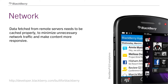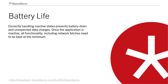This way, users don't have to stare at a spinner and wait for the server to respond with data when they've just seen this content a few seconds ago. All applications should react to window state changes, such as the app being minimized or the screen going to sleep. Once the application is inactive, all functionality, including network fetches, need to be kept at the minimum. Correctly handling inactive states prevents battery drain and unexpected data charges, especially since the BlackBerry 10 experience targets multitaskers who often keep applications running in the background for extended periods of time.